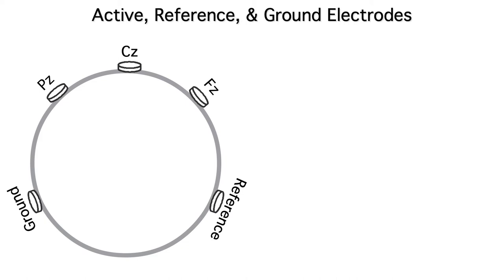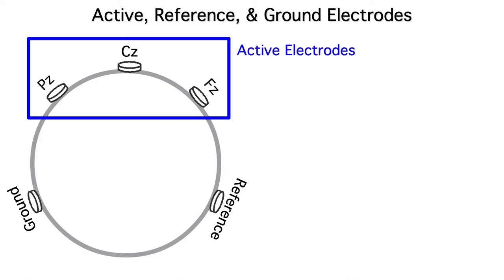For example, imagine that we wanted to record from FZ, CZ, and PZ. These would be our active electrodes. Usually we use the same reference and ground for all the active electrodes.